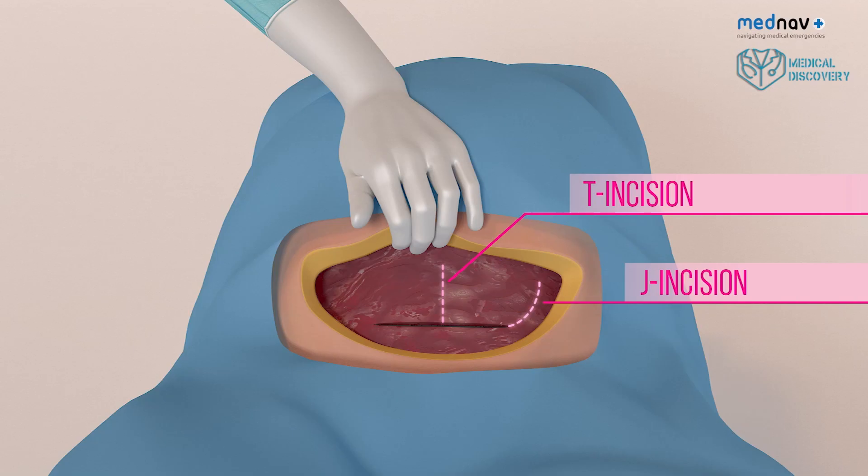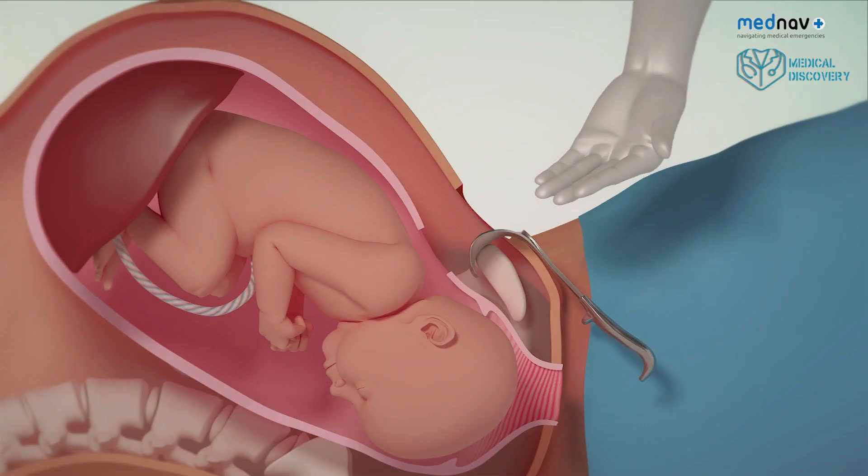T or J incisions. If it is not possible or it is difficult to gain access, you can extend the incision with scissors to create more access.